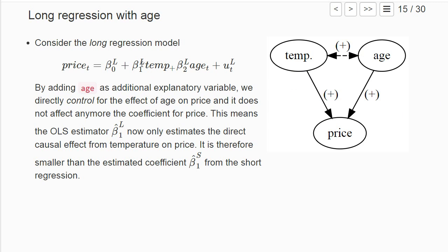Then our estimate for the coefficient in front of temperature, β₁ˡ, only estimates the direct causal effect from temperature on price. By controlling for h, we remove this indirect effect that higher h leads to higher price and temperature is positively related with h. So our estimator in the long regression β₁ˡ is an unbiased estimator of the causal effect from temperature.